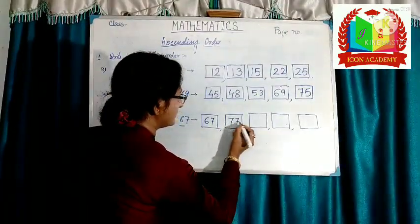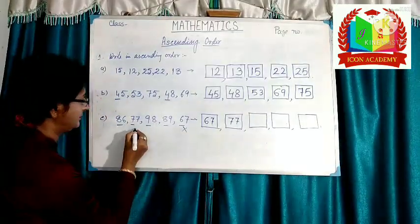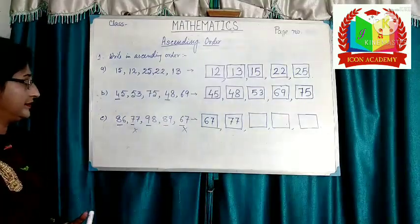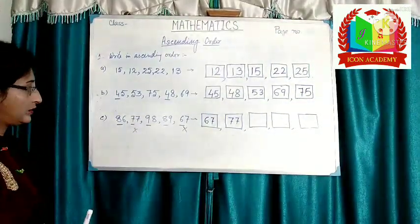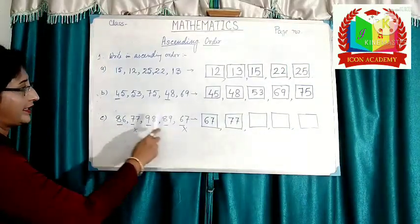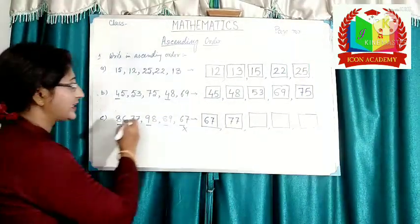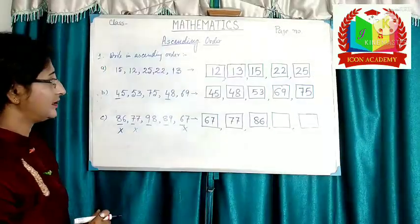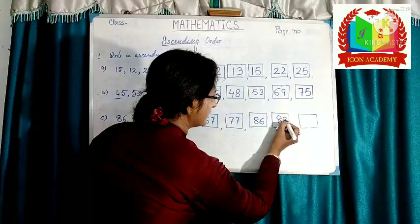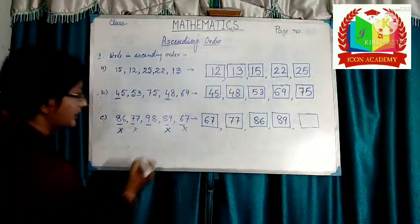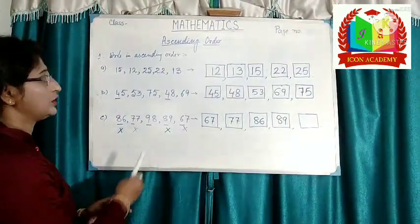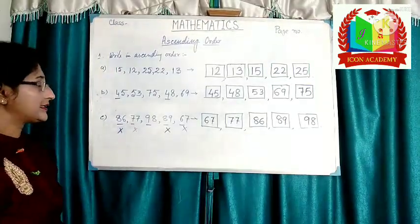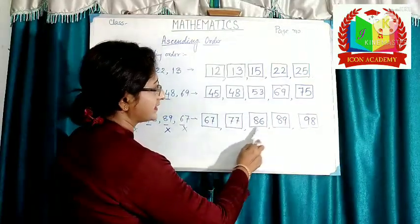Cross off those two numbers. Now for the remaining numbers 86, 98, and 89 — two digits are the same in the tens place for 86 and 89, which is 8. So see the ones place: 6 and 9. 6 is smaller than 9. So 86 comes after 77. Cross the number. After 86 comes 89. Write 89. Cross the number. What is left? 98. So write 98. We have arranged these numbers in ascending order: 67, 77, 86, 89, 98.